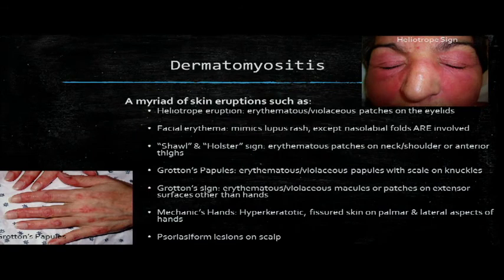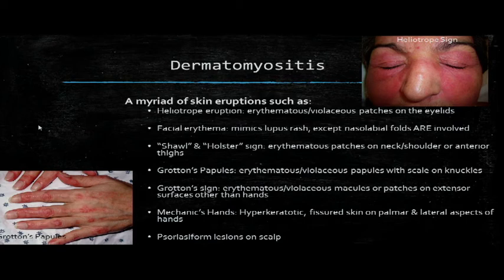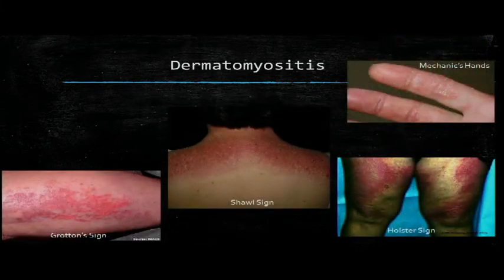Dermatomyositis is seen more in women than men with peak incidence between ages 40 to 50. Cutaneous signs include the heliotrope eruption, facial erythema, shawl sign, holster sign, and Gottron's papules. These are usually coupled with symmetric proximal weakness of the shoulders and hips, and you can also help your diagnosis with polyarthritis, dysphagia, ILD, and the usual constitutional signs of malaise, fatigue, and weight loss. On the slides you can see the Gottron's sign, shawl sign, holster sign, and mechanic's hands.